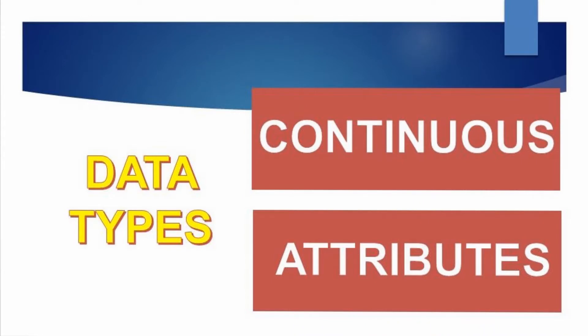First, we need to know that we have two main categories of data, and the statistical analysis that we do with these two types of data is going to be very different. First, let's talk about continuous variables. Continuous variables is everything that has a continuous value on a scale, such as temperature, weight, volume, time, etc.